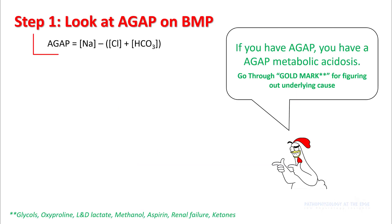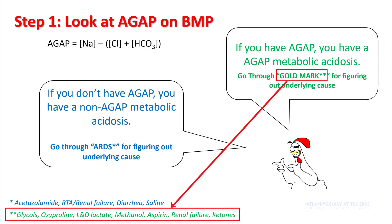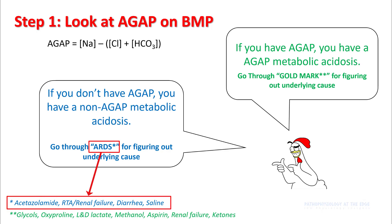If you're dealing with low bicarb on basic chemistry, look at the anion gap. If you have an anion gap, you have anion gap metabolic acidosis and go through the mnemonic GOLD MARK to figure out the underlying cause. If you don't have an anion gap, you are possibly dealing with a non-anion gap metabolic acidosis and go through the mnemonic ARDS — which stands for Acetazolamide, Renal Tubular Acidosis and Renal Failure, Diarrhea, and Saline use.